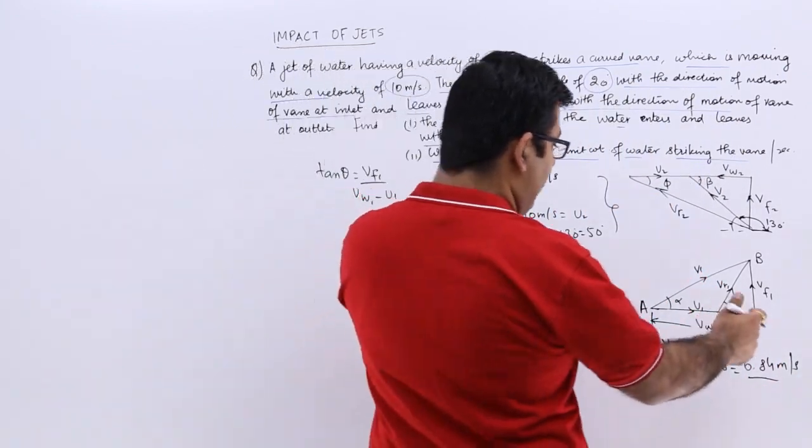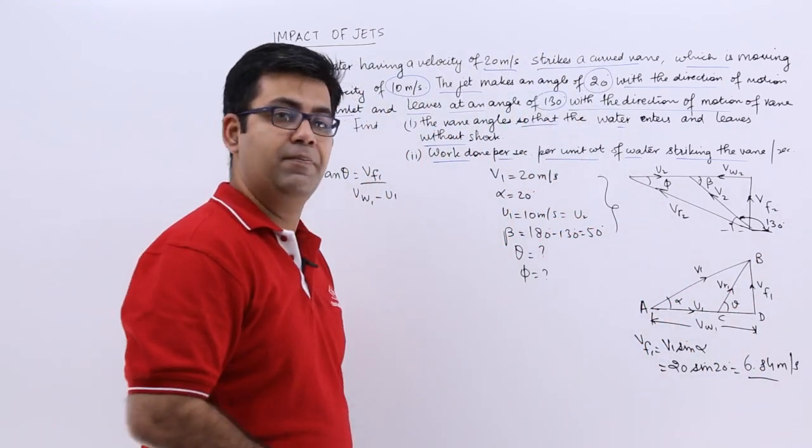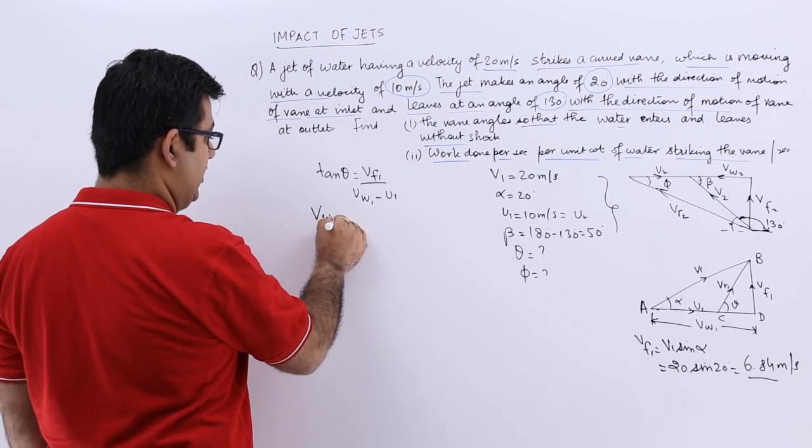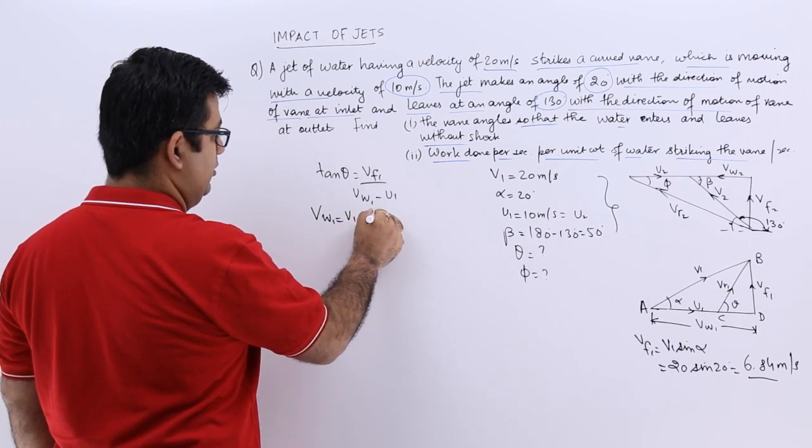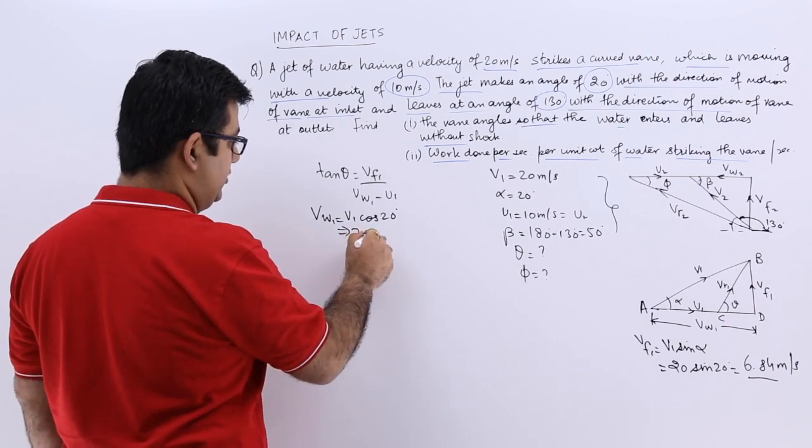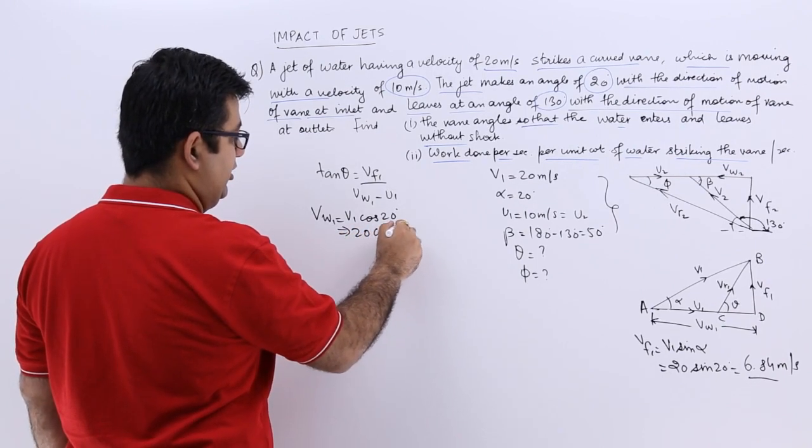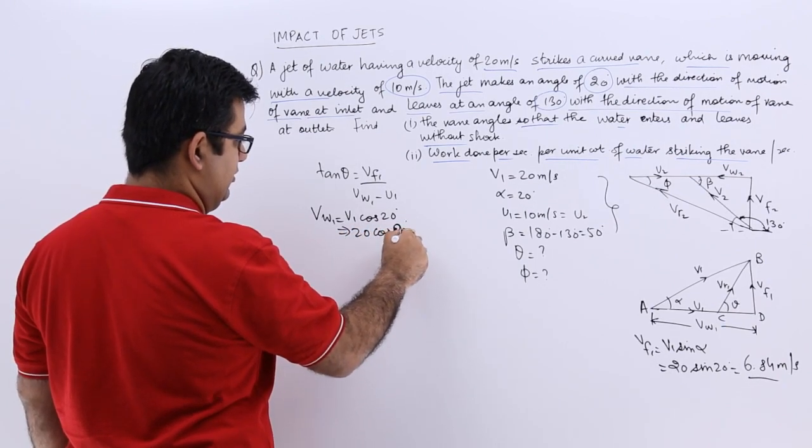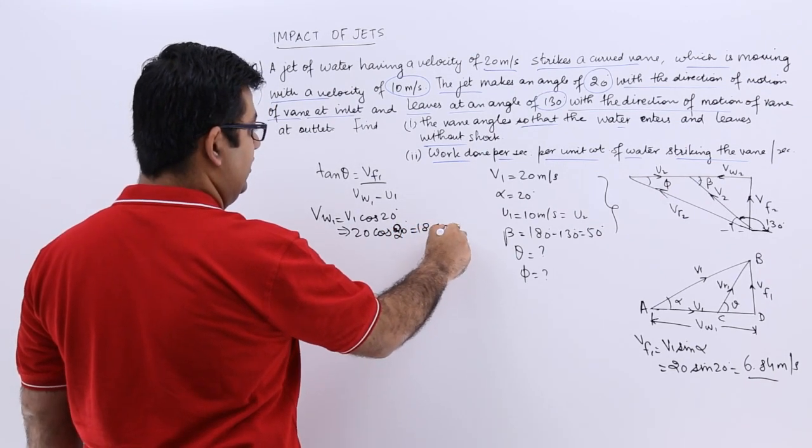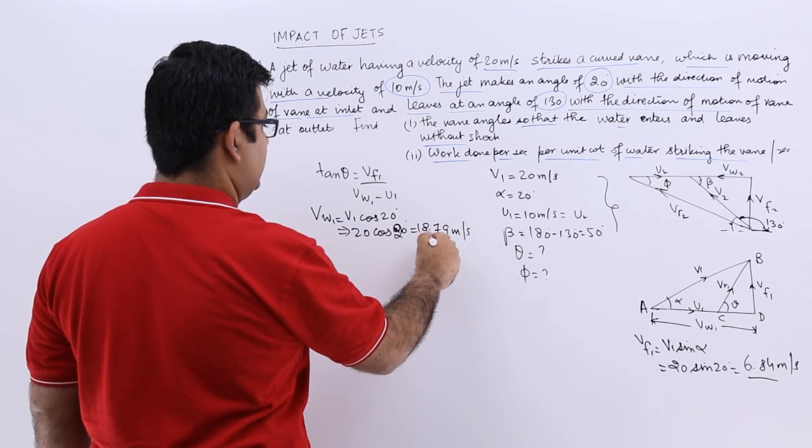And if you find out VW1, it is the cos component of V1. So VW1 will be V1 cos 20. So this becomes 20 cos 20, which is 18.79 meters per second.